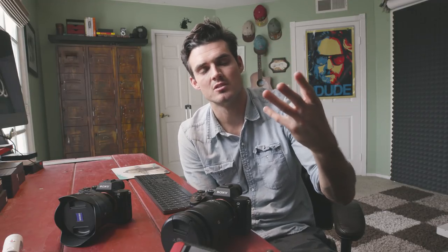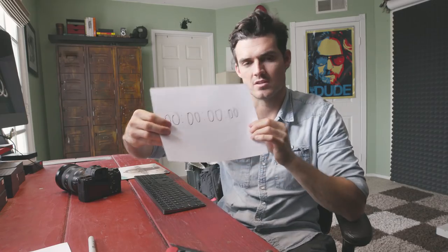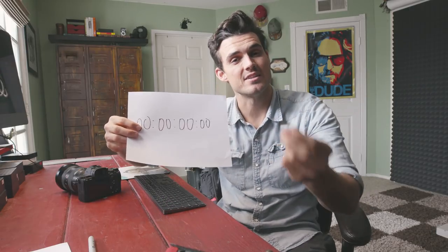The other use for timecode is when you book a big job — network television — and they're like, bring your camera and make sure you have timecode on it. See that running clock? This is what timecode is: broken down by hours, minutes, seconds, and frames, that runs itself on your camera and embeds it into the metadata.